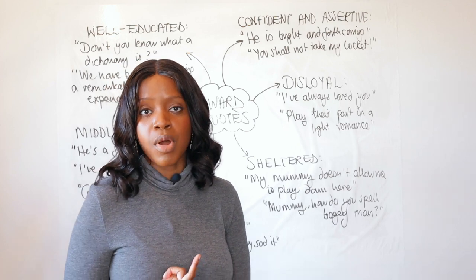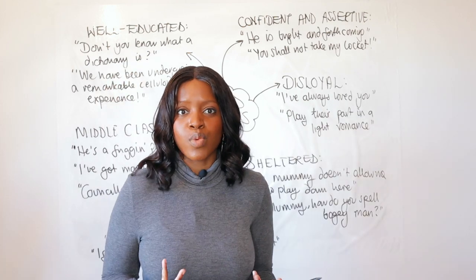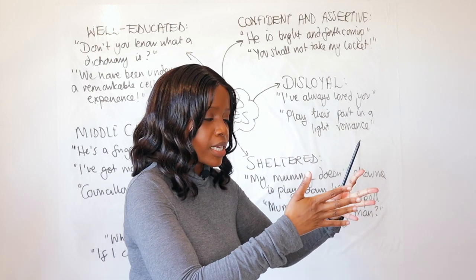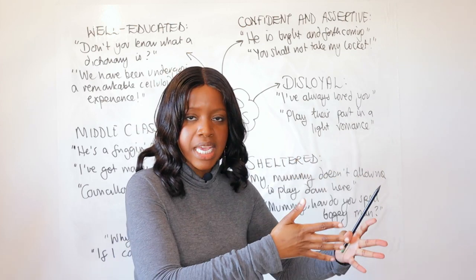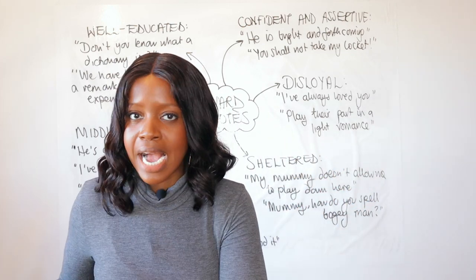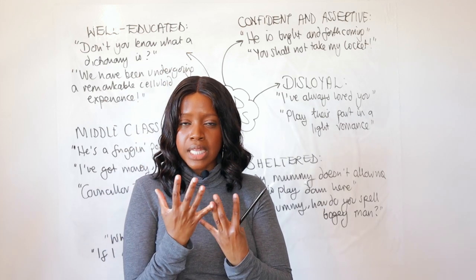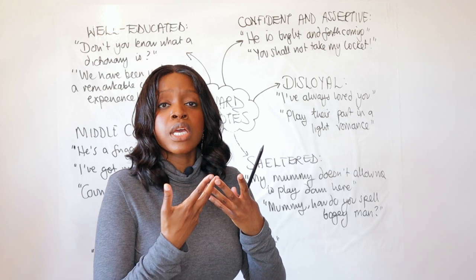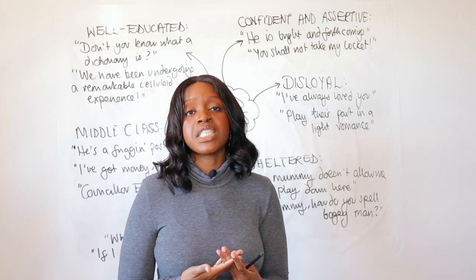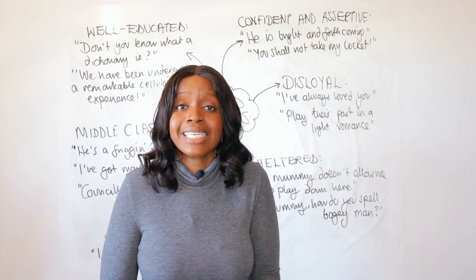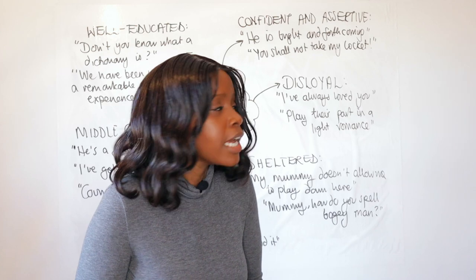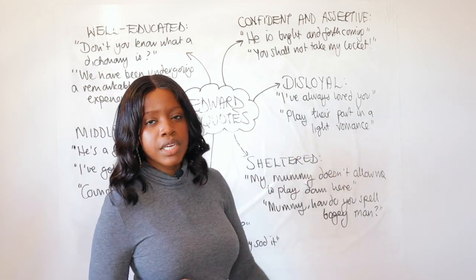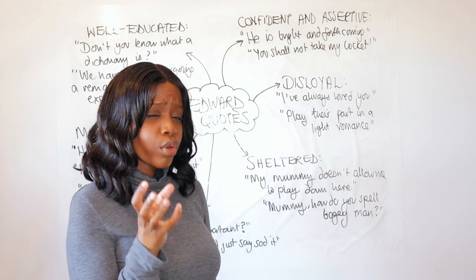Mickey isn't dependent on his mom and can't be, because his mom is always working. When she is home, she has to split her attention between Mickey and all her other children. Edward, as an only child, is really coddled and sheltered, whilst Mickey by contrast is very independent — because he has to be. Mickey has to grow up really fast.